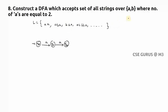Any number of B's can appear — there is no constraint given. That's why for Q0 one self-loop on B, for Q1 one self-loop on B, and for Q2 one self-loop on B. Like this you can handle the B transitions for number of A's equals 2.